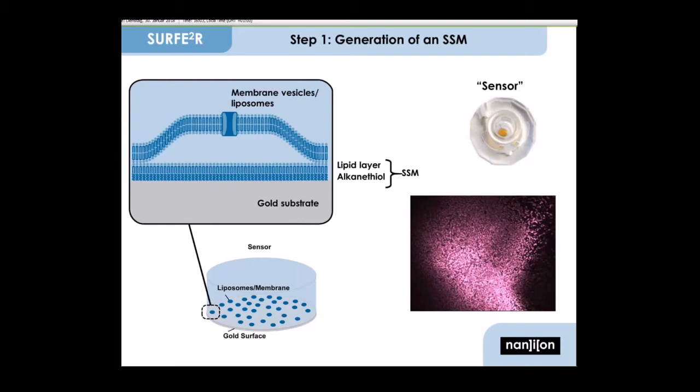For the SURFER instrument, we use gold substrates of a three millimeter diameter. This surface contains a lot of the membrane vesicles. Ideally, the surface is completely covered with the sample, as you can see in the picture on the right side. So in sum, this represents the membrane of several thousand cells.